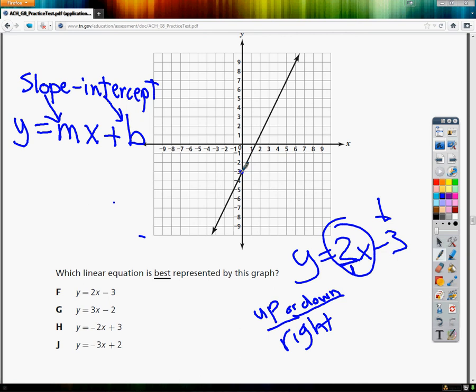And then it tells me to go up 2 because it's positive 2. If it was negative, it would go down. And then to the right, 1 from that point. So I'm going to go up 2, 1, 2, and then I'm going to go over 1. Well, that's on the graph. And if I go up 2 more and to the right 1, that's on the graph. Up 2 more and right 1, well, that's on the graph. Well, there it is.